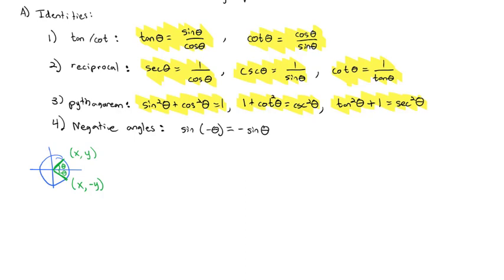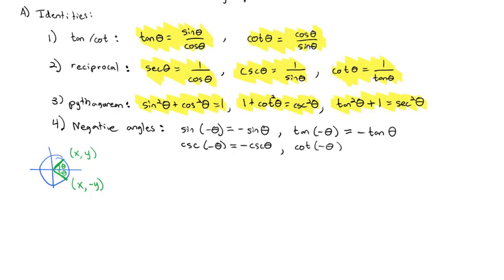Similarly, cosecant of negative theta — being the reciprocal of sine — also brings the negative out: negative cosecant of theta. Tangent of negative theta equals negative y over x, which is negative tangent of theta. Cotangent of negative theta behaves the same way, bringing the negative out. So for sine, cosecant, tangent, and cotangent, the negative can float in or out of the function.